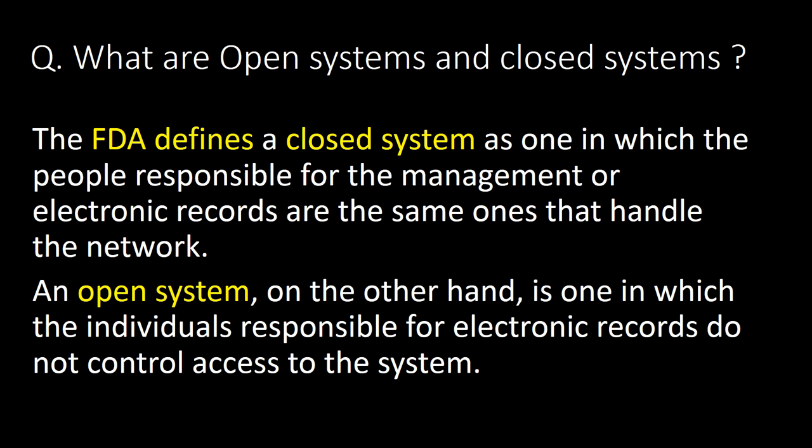A very frequently asked question is: what are open systems and closed systems? The FDA defines a closed system as one in which the people responsible for management of electronic records are the same ones that handle the network. An open system, on the other hand, is one in which the individuals responsible for electronic records do not control access to the system.